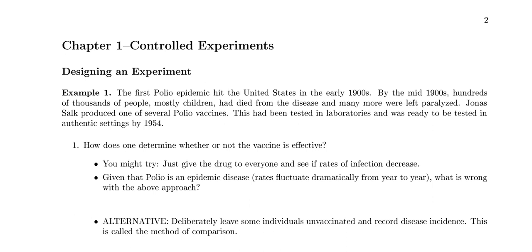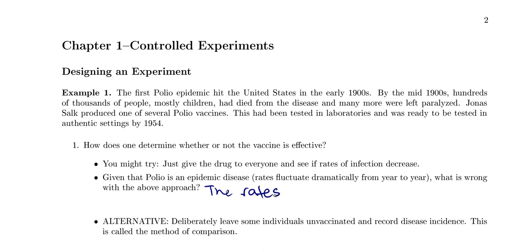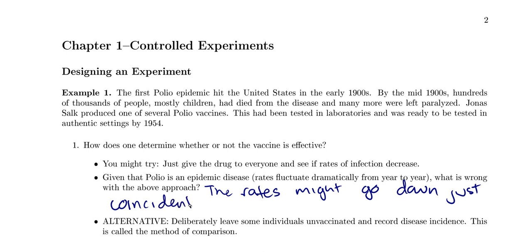So one thing you might try is give the drug to everyone and see if the rates of infection decrease. But if you remember that polio is an epidemic disease, which means the rates fluctuate dramatically from year to year — you might just happen to give the vaccine to people and then the next year the rates might be going down already. So the rates might go down just coincidentally, nothing to do with the vaccine.